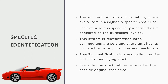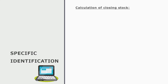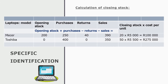So every single item in stock will therefore be recorded at their specific original cost price. To calculate the closing stock, the formula is: start with opening stock, add all the purchases during the year, subtract the returns, and subtract the sales. That gives you the closing stock — how many units do we have on hand?